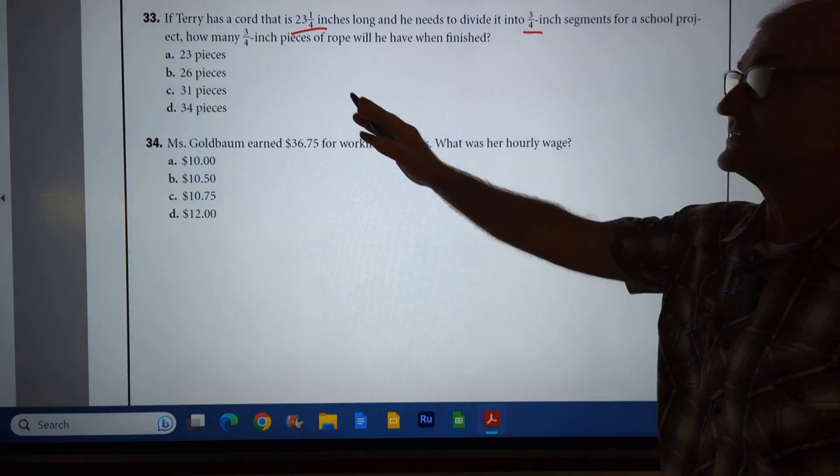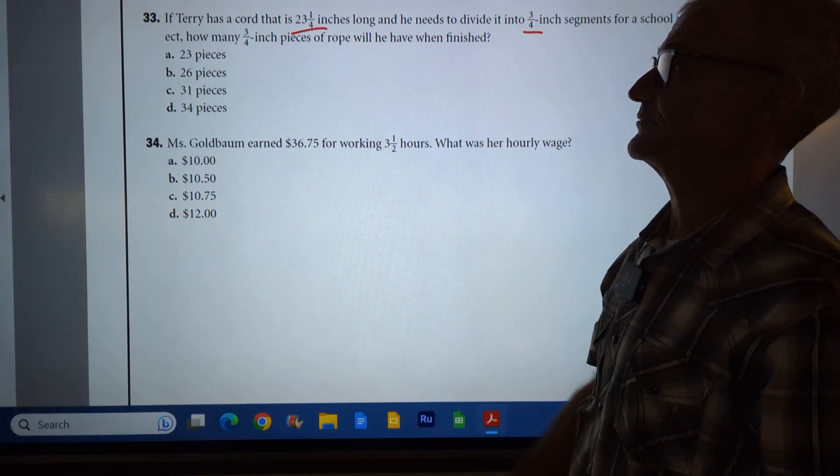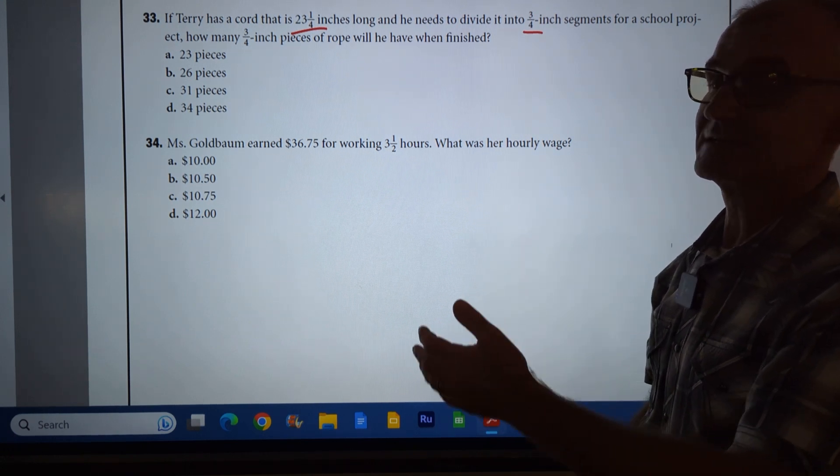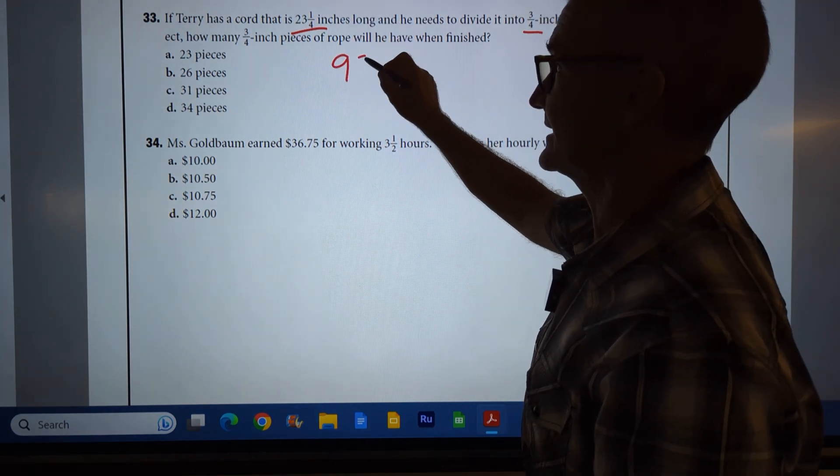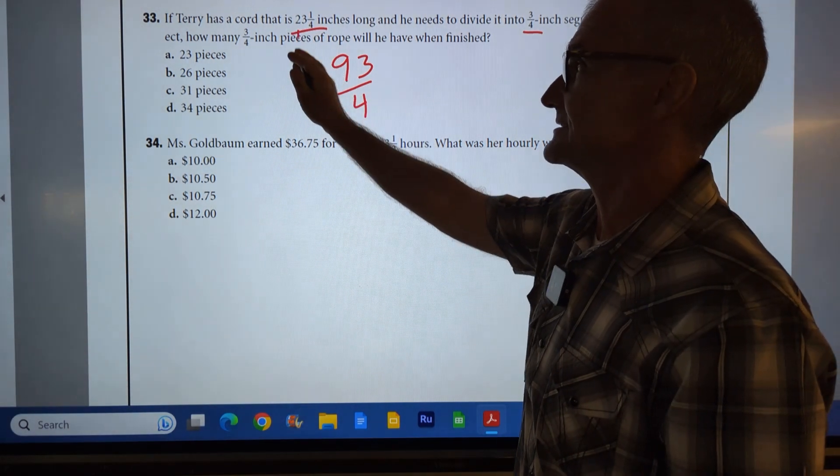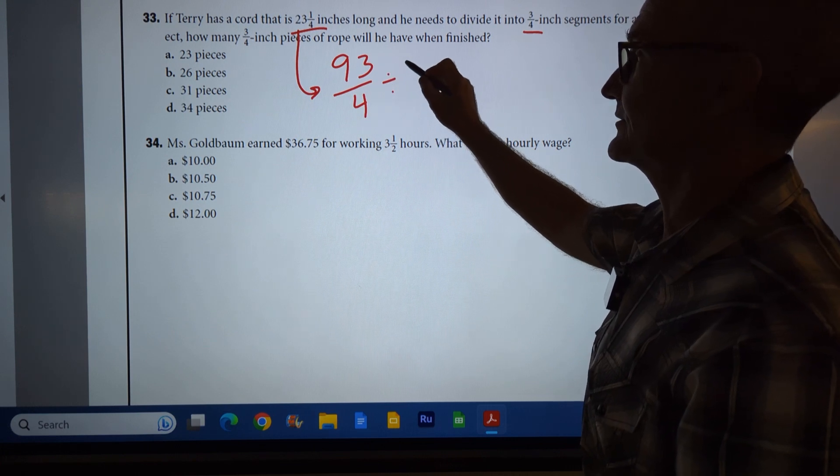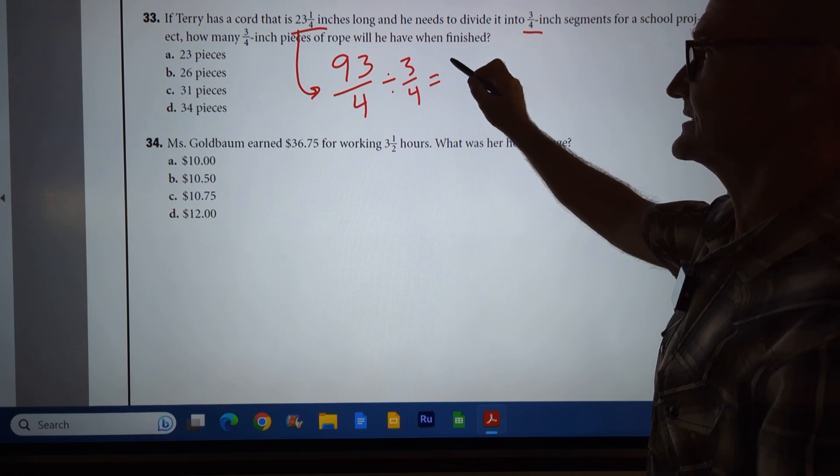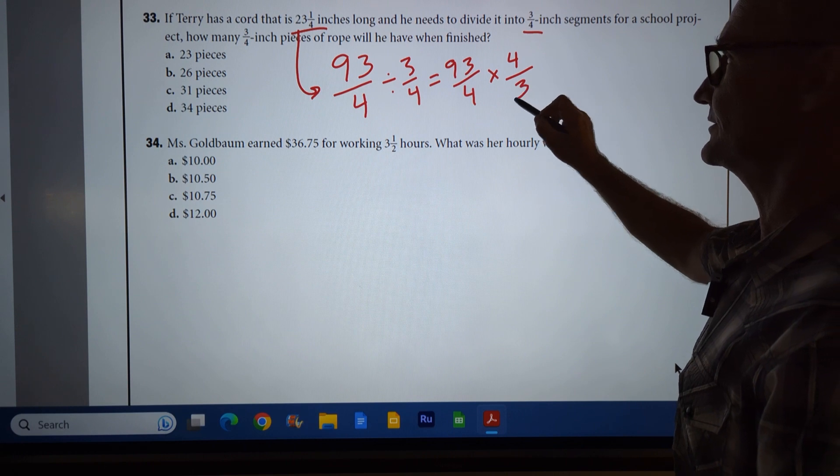Again, what I'm going to do first, I'm going to turn that away from a mixed number, so I'm going to do 23 times four. I'm going to just double that, 46, and double it again, 92. Add that one to it, and that gives me 93-fourths. So I have 93-fourths. That's the exact same as that, and I want to divide that into three-quarters, right, which is the same as 93-fourths times the reciprocal four-over-three.